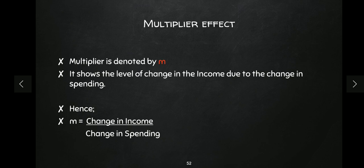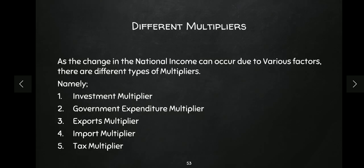Different multipliers exist because an economy has many injections and leakages, and all of them impact the circular flow of income. If there is a change in investment, government expenditure, exports, imports, or taxation, all of these affect national income more than proportionately. So we have: investment multiplier, government expenditure multiplier, export multiplier, import multiplier, and tax multiplier. We will study all of them, but if you understand one carefully, the others will come easily. Today I will explain the investment multiplier.